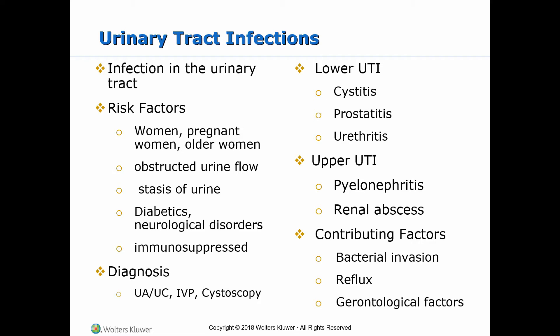Diabetic patients, females due to a shorter urethra, pregnant women, obstructed urine flow due to strictures in the urinary tract, bladder tumors, BPH or benign prostatic hyperplasia, urinary retention, incomplete bladder emptying, and after instrumentation such as urinary catheter and cystoscopy. Immunosuppressed patients and older women with bladder prolapse are also at high risk.